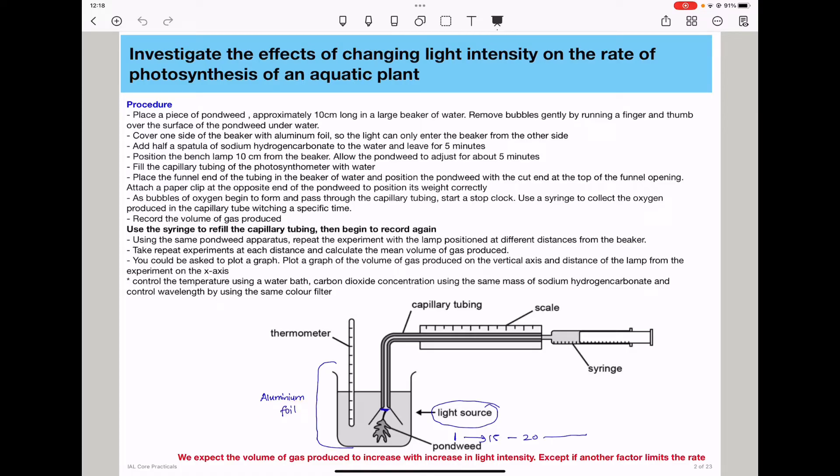Then we add half a spatula of sodium hydrogen carbonate to the water and leave for five minutes. The sodium hydrogen carbonate is there to act as a source of carbon dioxide because in photosynthesis, plants need carbon dioxide, they need water, they need a light source, and the correct temperature for photosynthesis to be carried out. So sodium hydrogen carbonate is used to provide carbon dioxide for the aquatic plant.